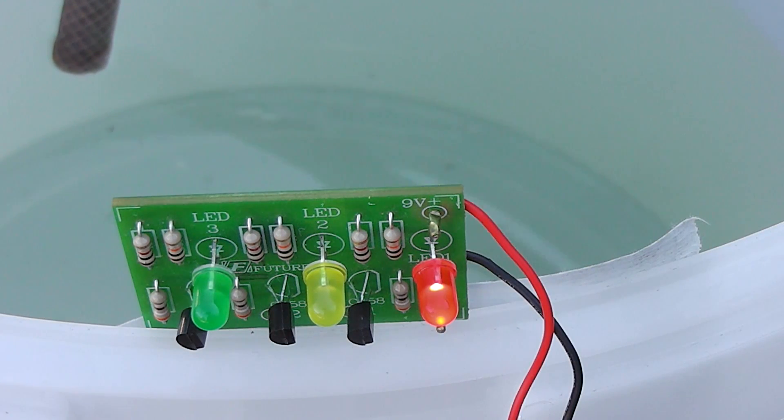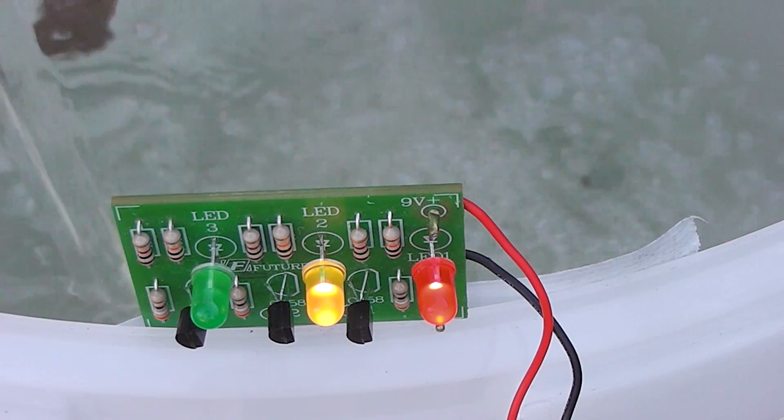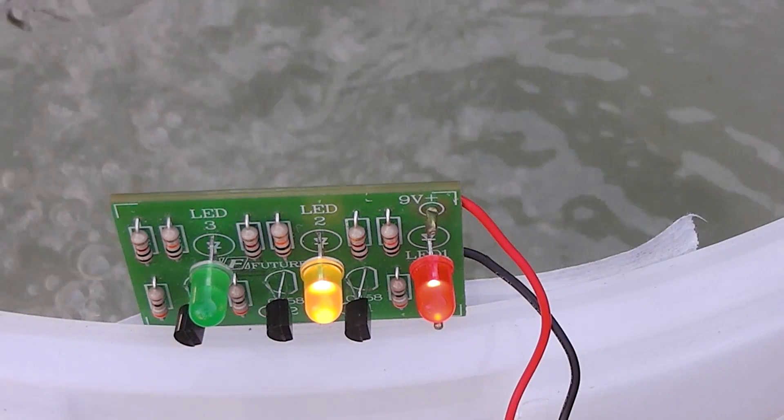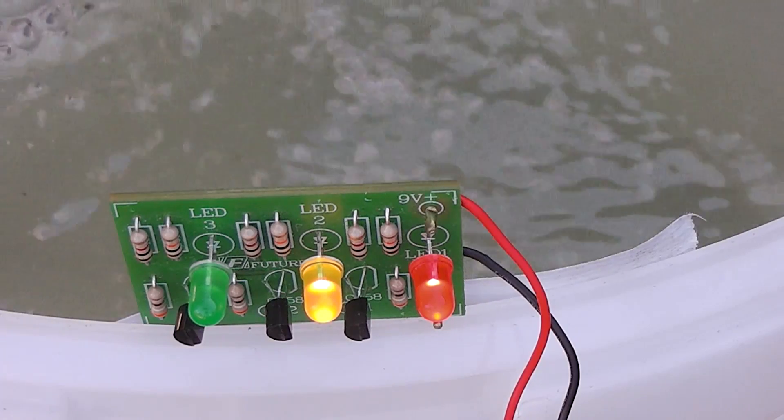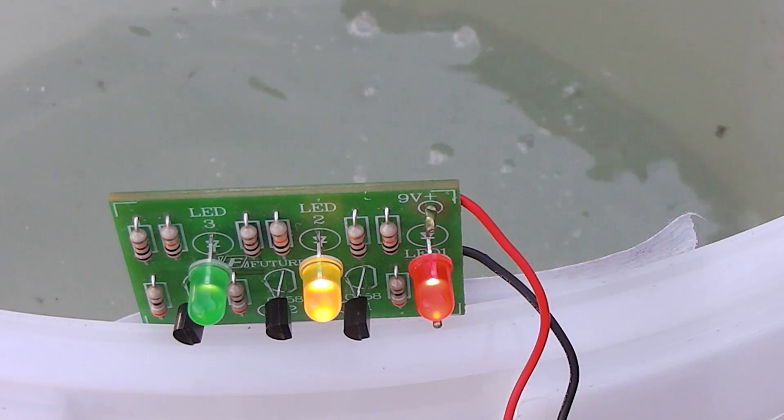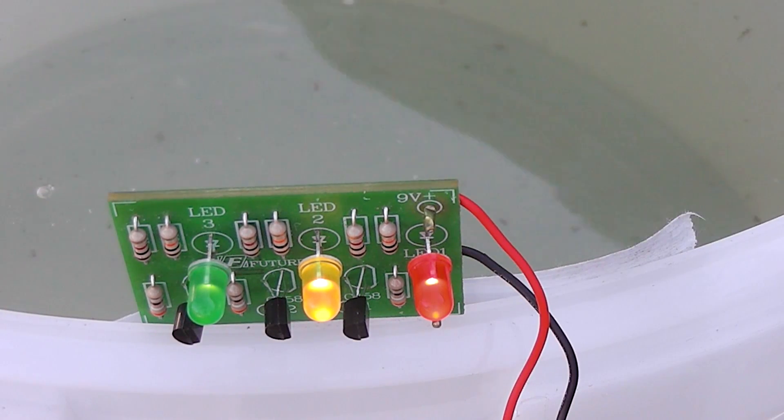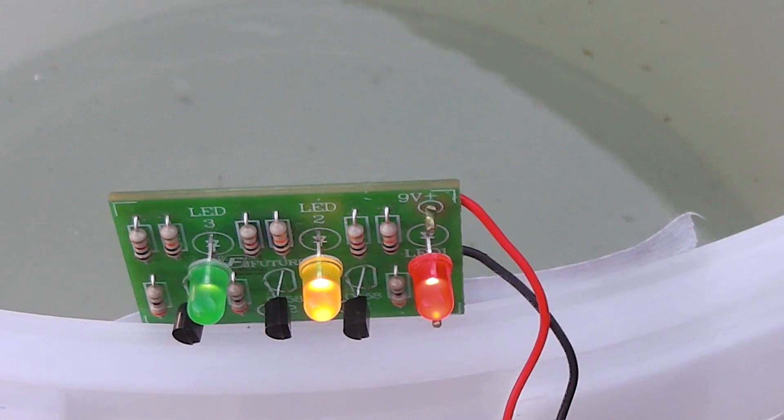Now the middle one will go on. It is half of the bucket full of water. There you go, middle one. I will just speed up the process. I will pour the water. So here you go, the bucket. This is it. This is where the bucket is full. As you can see, all three LEDs are now glowing.